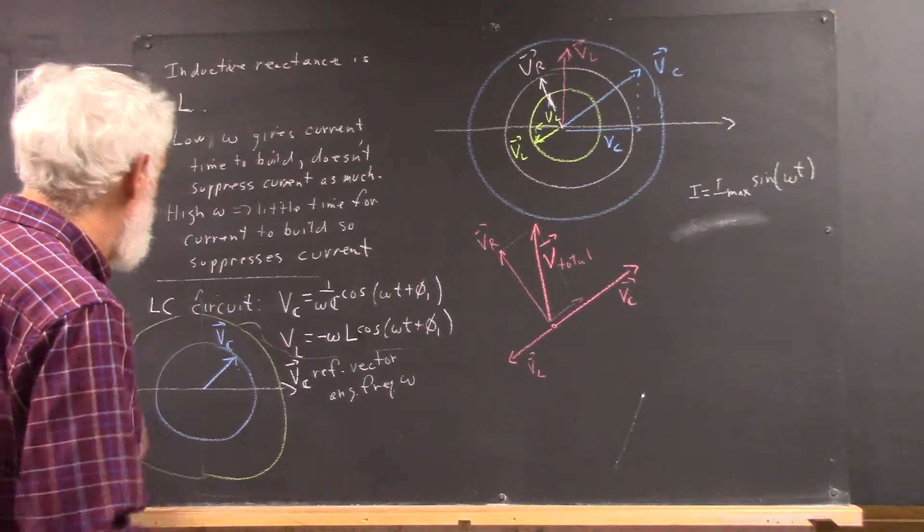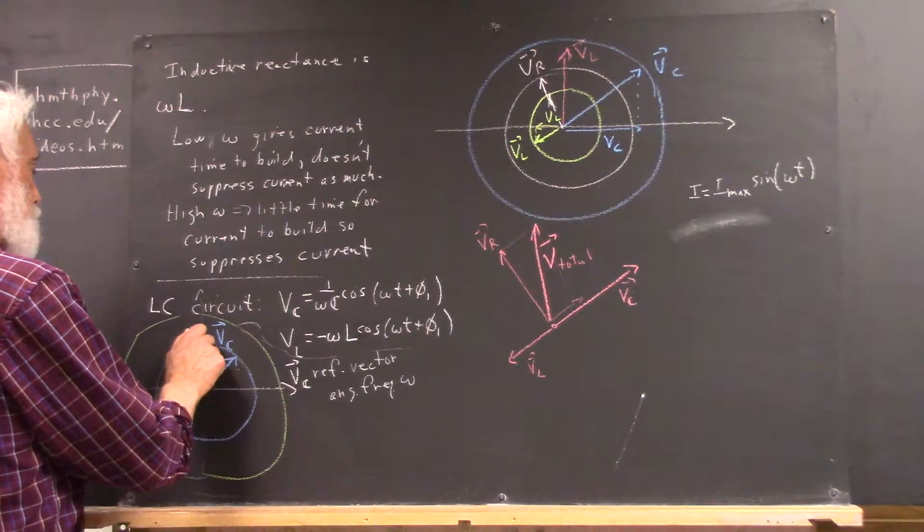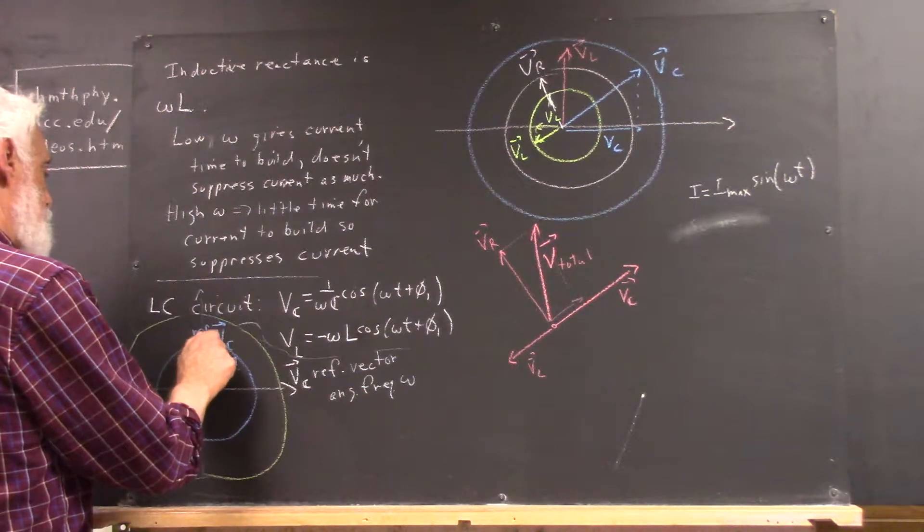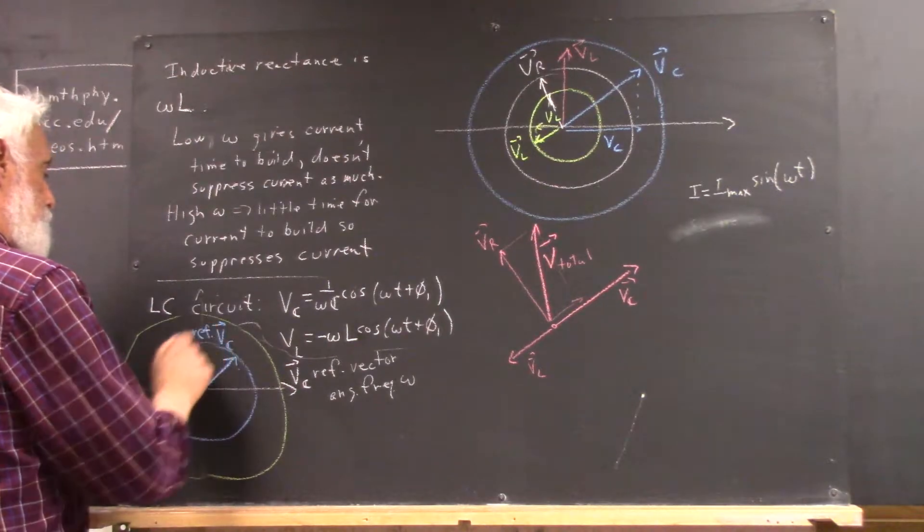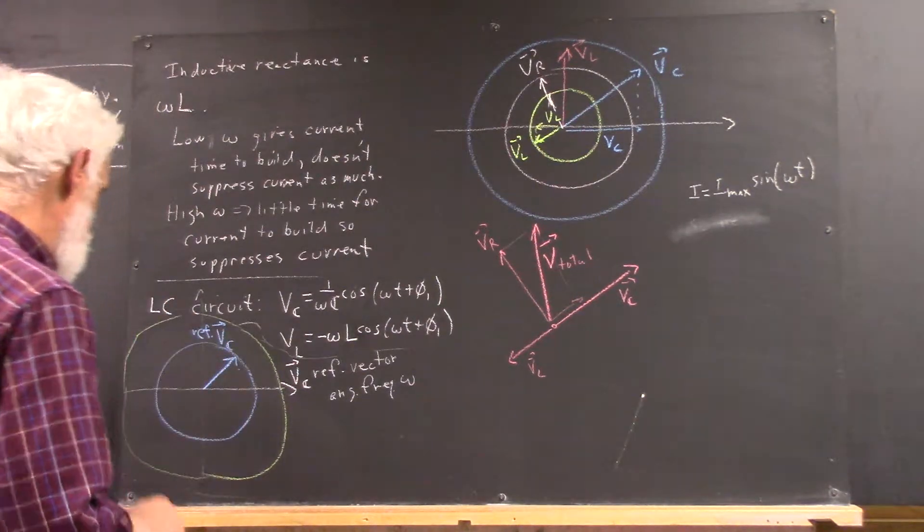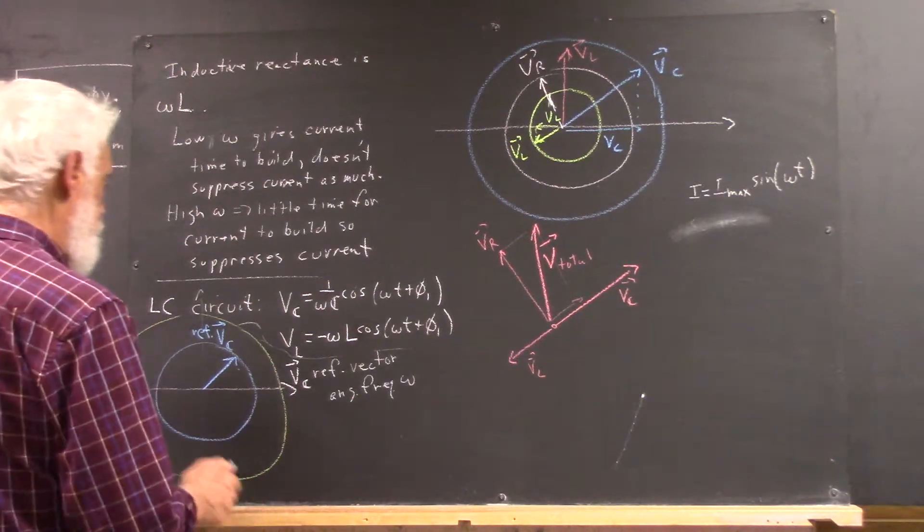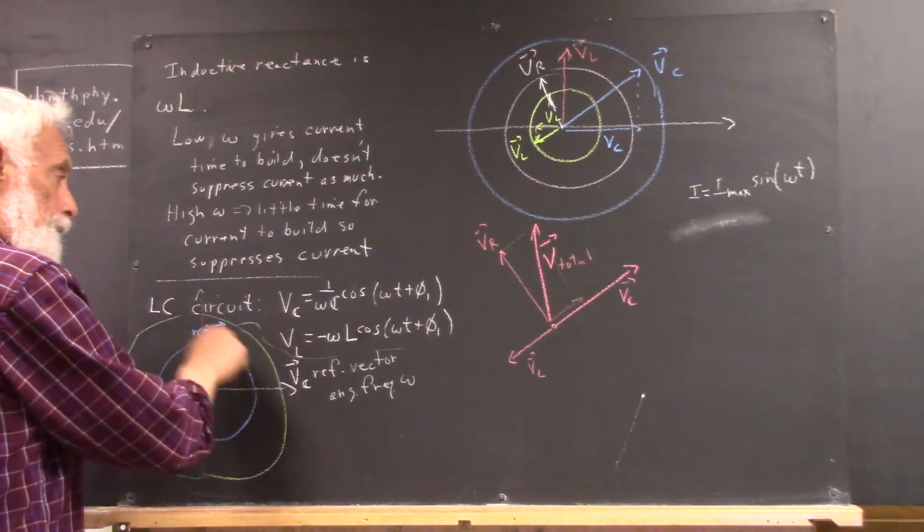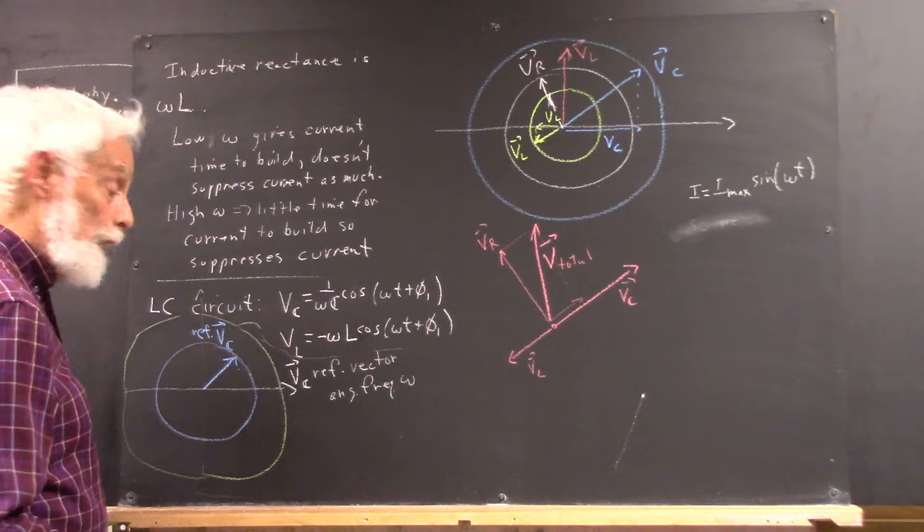So, this vector VC, it's a reference vector, so I'm going to write ref, might not be legible, but that just indicates that this is a reference vector.